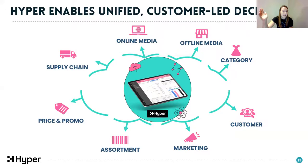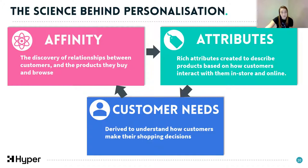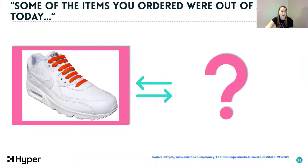How do we actually do it? We use Affinity Analytics predominantly. It's the backbone of the product we're building, but also used in a lot of the consultancy work. There are three main components to Affinity Analytics: Affinity, Attributes, and Customer Need States. To apply this to an example - let's say one of our customers has tried to order red shoelaces on our online shop but we don't have them in stock. How can we use Affinity Analytics to automate what we substitute them with?